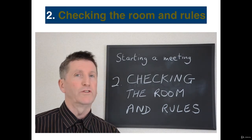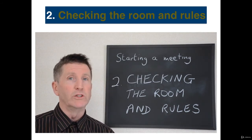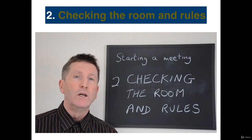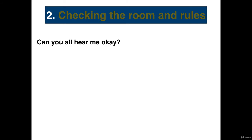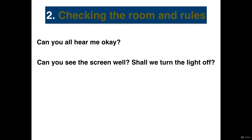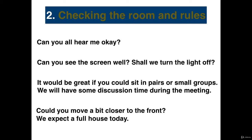The second stage after the welcome is to check the room and any rules you might have for the meeting. It's always important to check that people can see the screen well and can hear each other. Here are some typical phrases: "Can you all hear me OK? Can you see the screen well? Shall we turn the light off? It would be great if you could sit in pairs or small groups. We will have some discussion time during the meeting. Could you move a bit closer to the front? We expect a full house today." An important point is to check if there are any rules to help the meeting run smoothly, such as asking everyone to turn off their devices and to listen to each other well and respond positively.